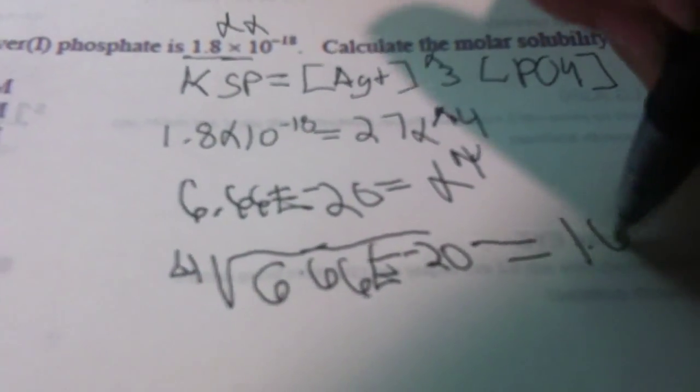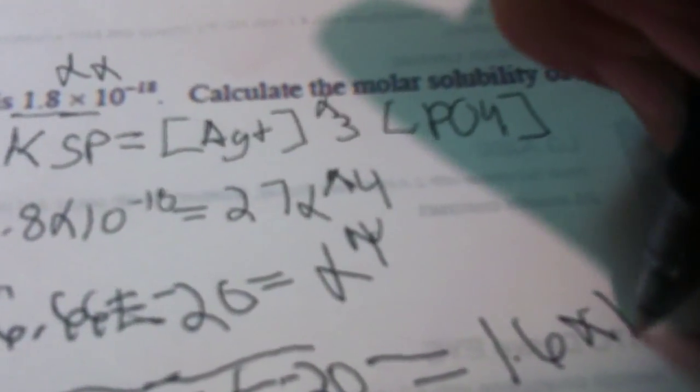Once you enter these values into your calculator, it would be 1.6 × 10⁻⁵.